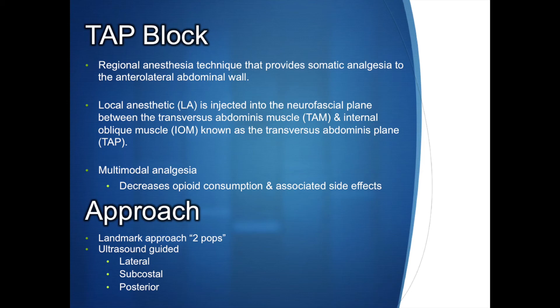Typically, two tactile pops are felt when performing the block. The first pop is felt when going through the fascia between the external oblique muscle (EOM) and the IOM. The second pop is felt when going through the fascia between the IOM and the TAM, which at this point allows the local anesthetic to be deposited within the TAP.